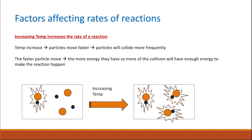We can see in this figure that at lower temperature there is only one effective collision between the particles. But when we increase the temperature, because particles move faster, they start to collide with each other more and there are more effective collisions between the particles, making the rate of the reaction faster.